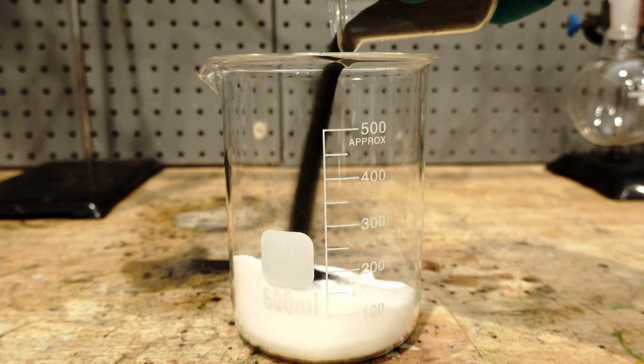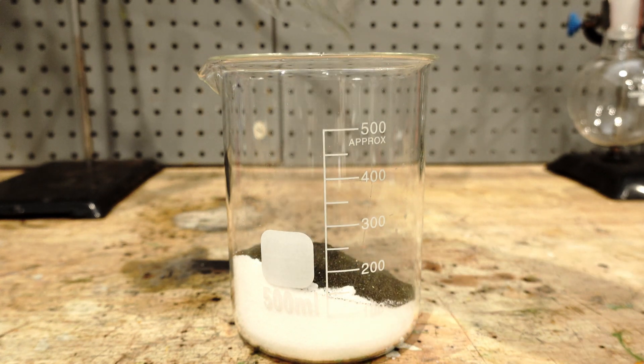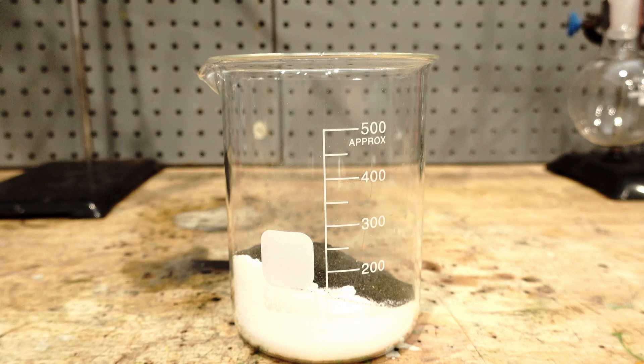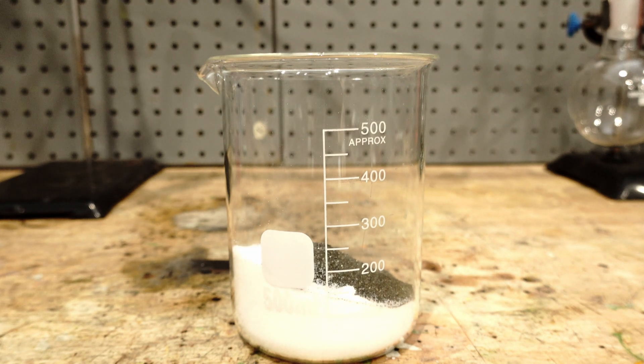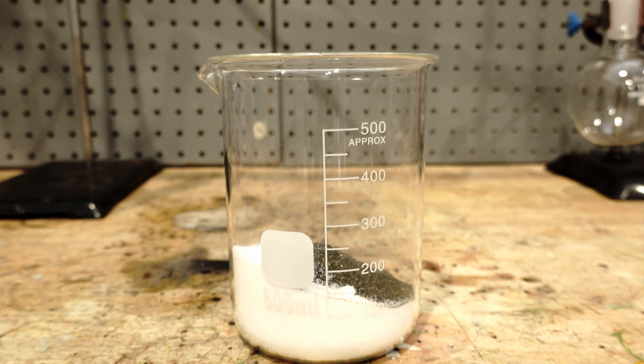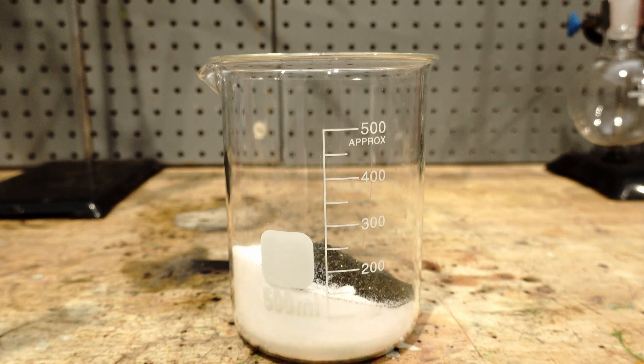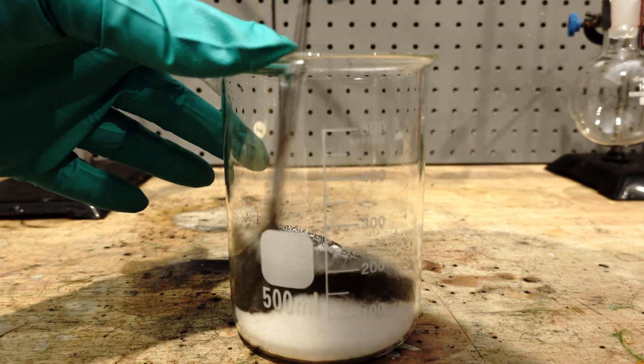To this, we add 47.4 grams of potassium permanganate. We give both reagents a rough mix to allow for a smoother reaction.